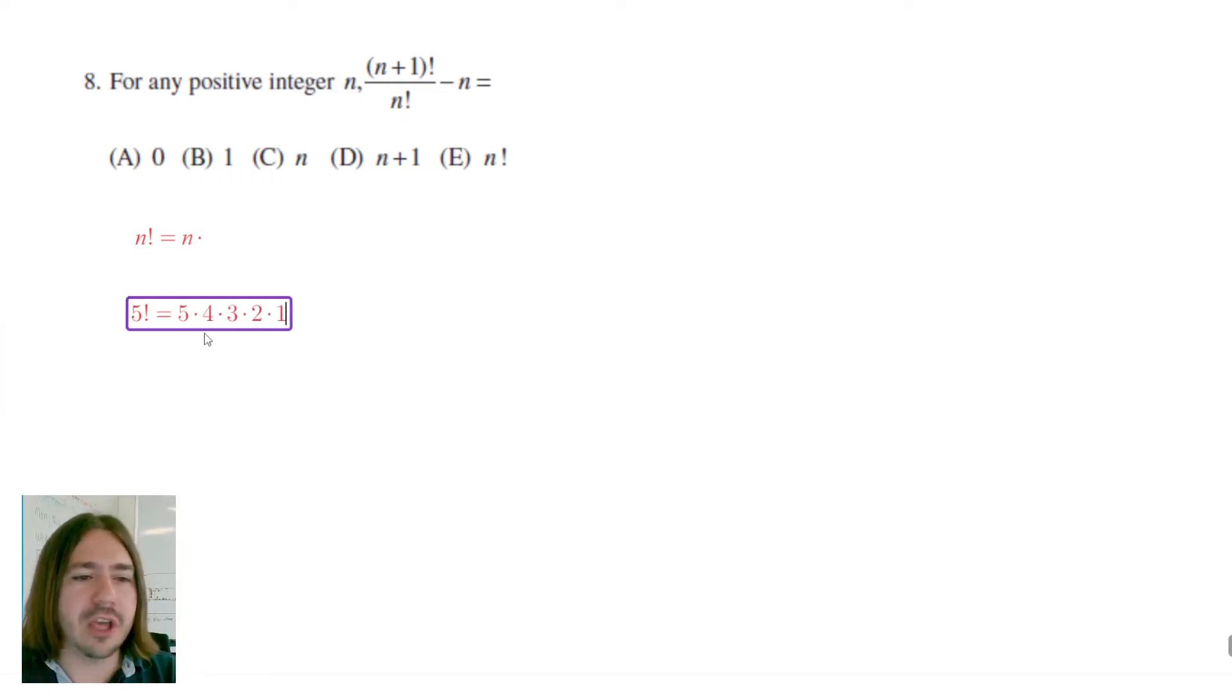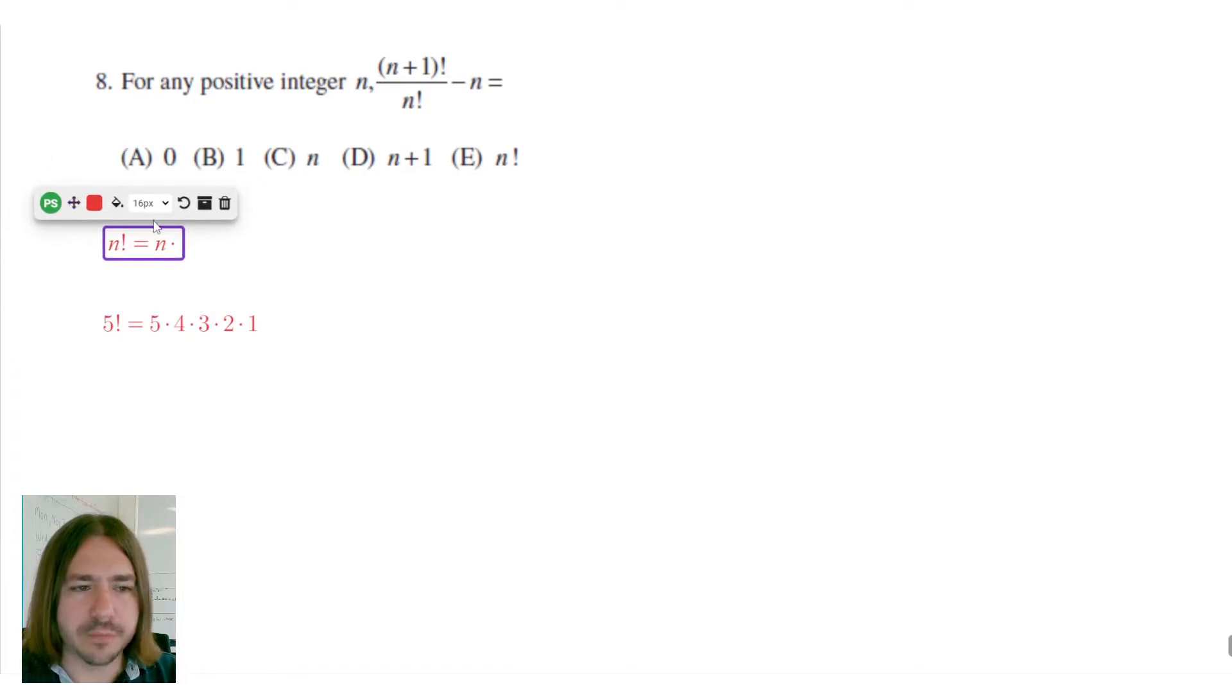So whatever the number is, you multiply it by every positive integer that comes before it. So if I just have this in general, like n factorial, I would take that number n, whatever it is, and then multiply it by the number that came before it.